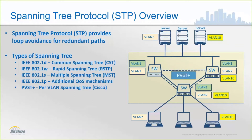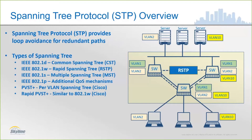In the Cisco ecosystem, Cisco implemented Per VLAN Spanning Tree Plus, or PVST+, which is based on Common Spanning Tree or 802.1d. They also introduced Rapid Per VLAN Spanning Tree Plus, which is similar to the 802.1w protocol, or Rapid Spanning Tree Protocol.